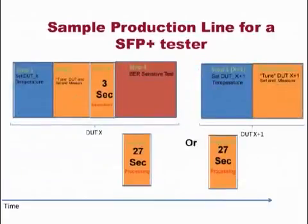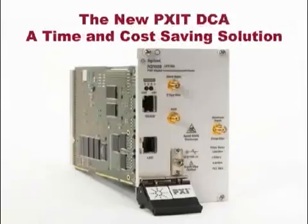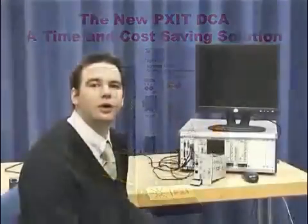This, of course, does assume that the processing of 27 seconds can occur somewhere else on the production line. Now you have the information on our new 10-gig filter, including PON, and also our new feature, Smart Post Processing. If you would like more information, please go to the following link. Thank you very much for your time.